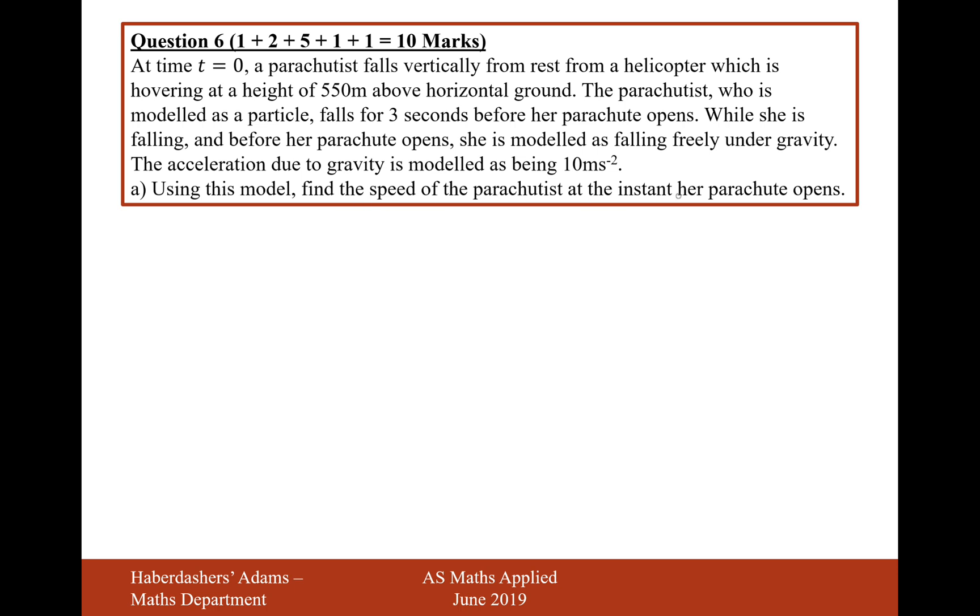Using this model, find the speed of the parachutist at the instant her parachute opens. So this is going to be for 3 seconds before her parachute opens, and she is falling at 10 meters per second squared. So that's going to be speed equals acceleration times time, because the initial speed is equal to 0. We're effectively using the SUVAT formula, v equals u plus at here, where u is equal to 0. So the final speed in this section is going to be the acceleration, which is 10 meters per second, times 3, which is 30 meters per second. So when her parachute opens, she's going to be traveling at 30 meters per second.